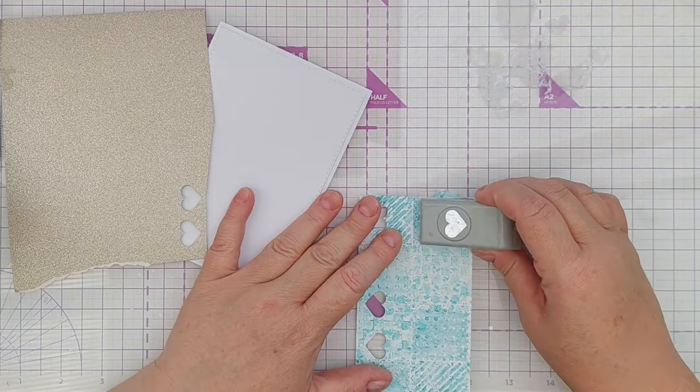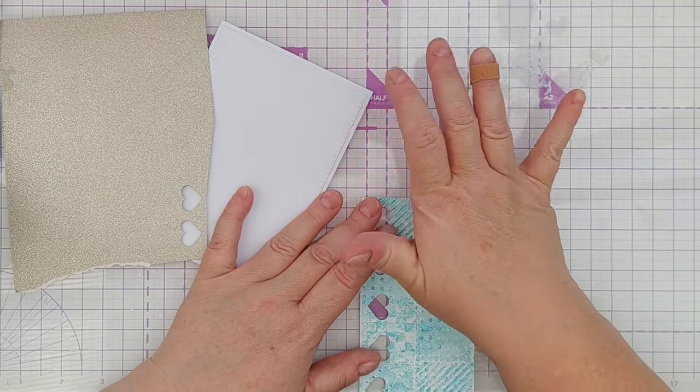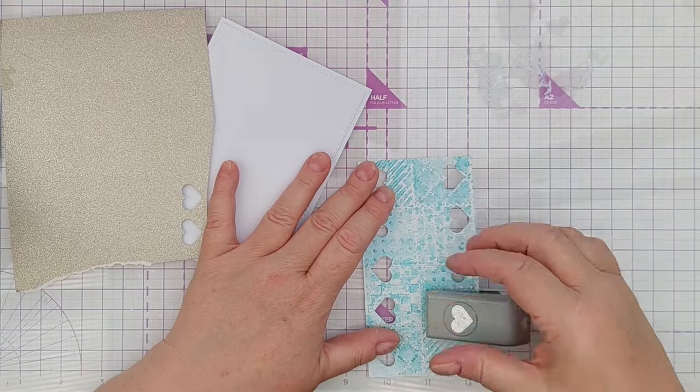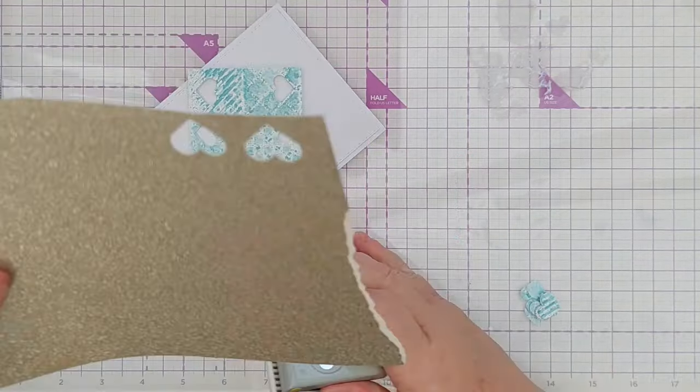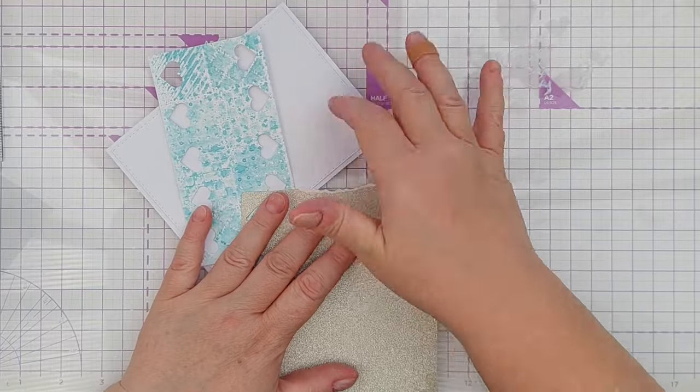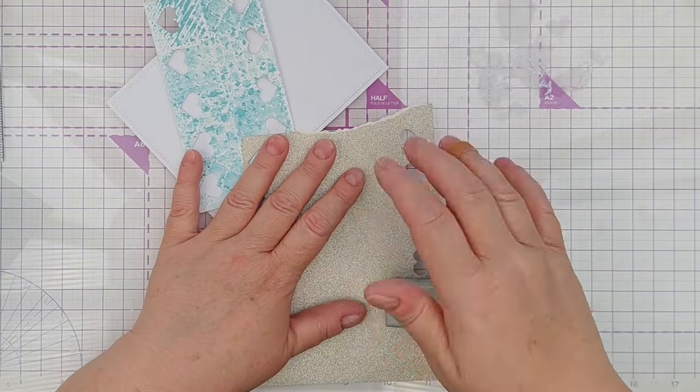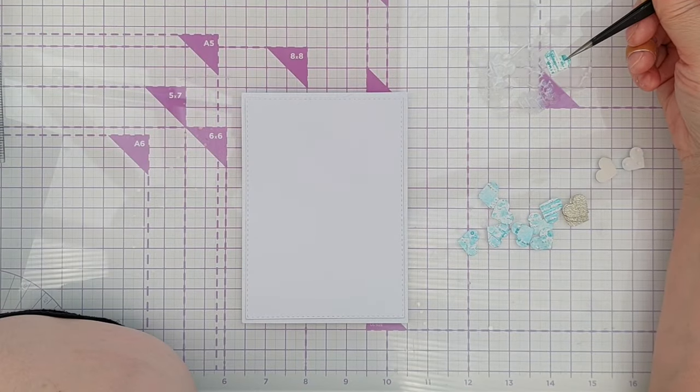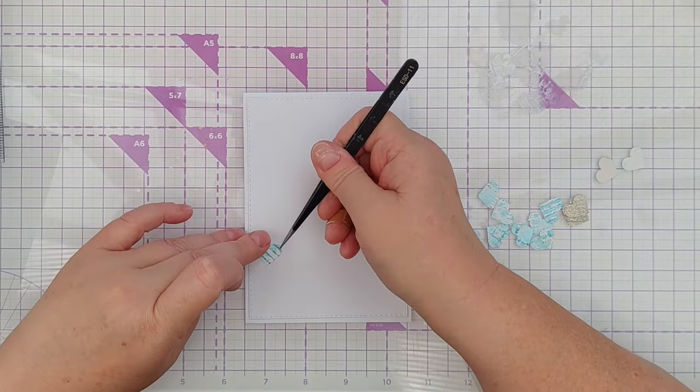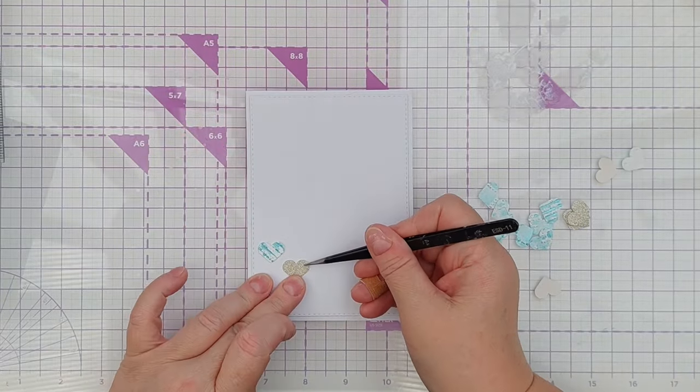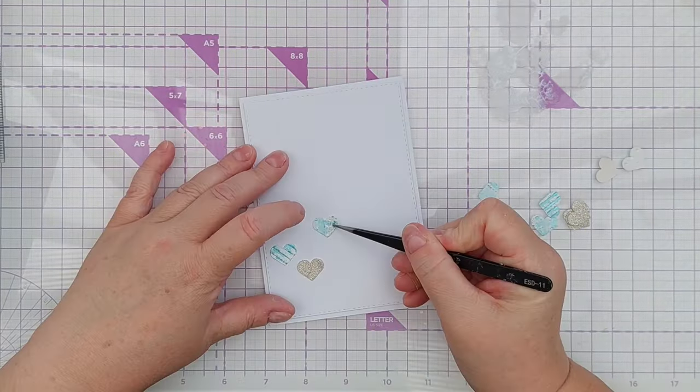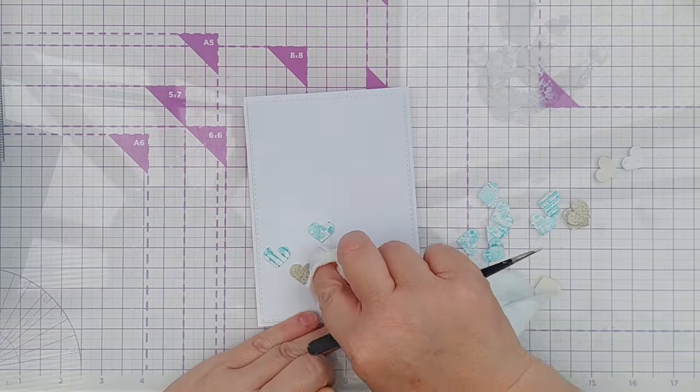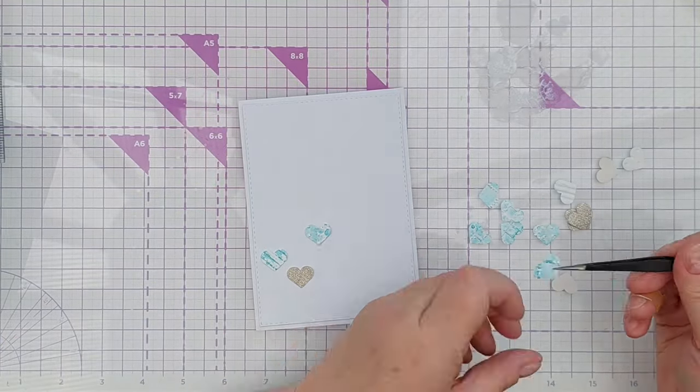I made this background in my Pigment Powders 101 series. I'll leave a link to that in the video description if you want to go and see how it was done. I really loved how the little hearts turned out. They are colourful and shimmery but they still have the texture from the embossing folder because the punch didn't squash the dimension out of them like die cutting would have done.